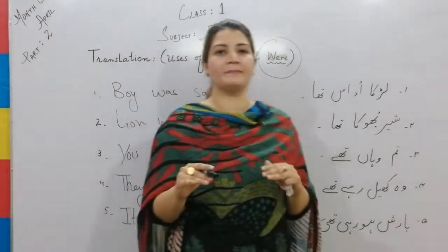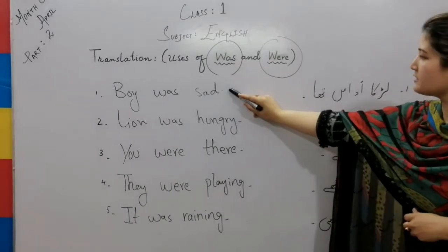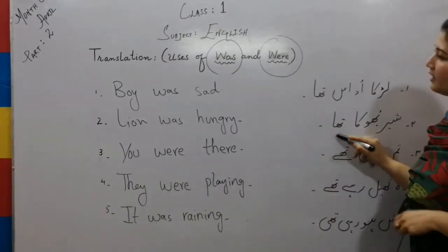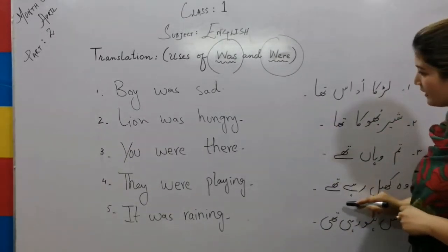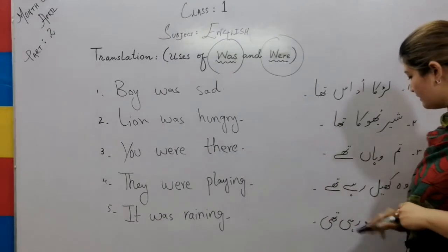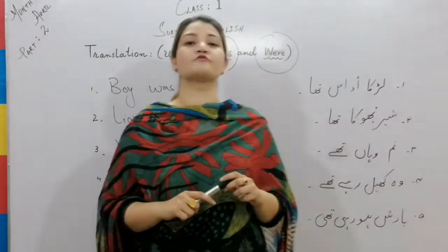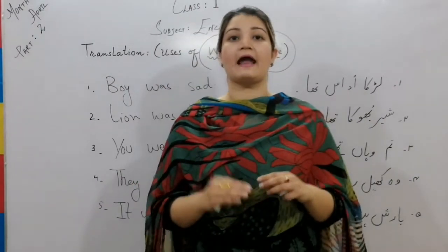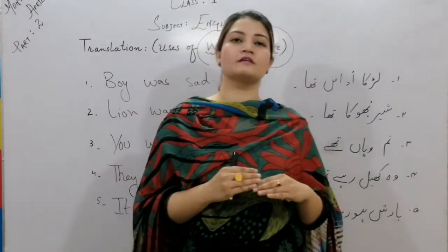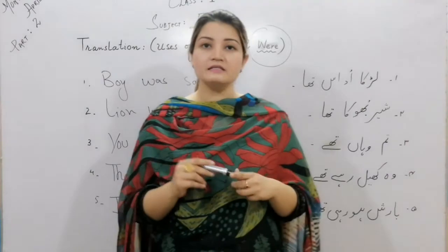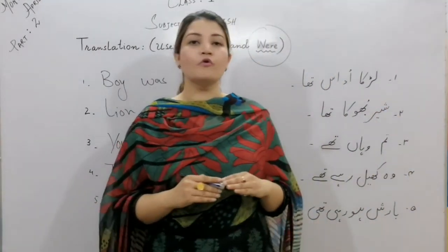Let's repeat the translations once more: 'Ladka udaas tha' — Boy was sad. 'Sher buka tha' — Lion was hungry. 'Tum wahaan tha' — You were there. 'Woh khel rahi thi' — They were playing. 'Baarish ho rahi thi' — It was raining. Always remember the difference between 'was' and 'were': in what cases to use 'was' and in what cases to use 'were'. If you remember your singular and plural nouns, translation will no longer be difficult.